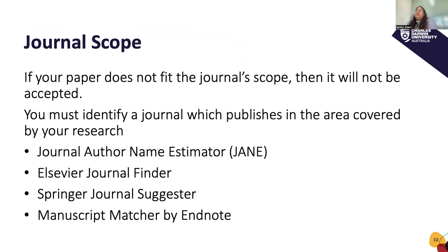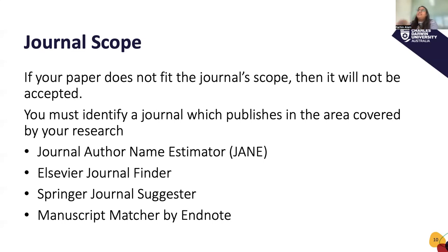The next thing you should look at is your journal scope. If your paper doesn't fit into the journal scope, it will not be accepted. It helps to think about audience — does your topic have broad appeal that a broad range of readers will be interested in, meaning you can consider multidisciplinary titles? Or does it require specialist knowledge, meaning you need to target journals with a narrower scope? There are tools designed to help you discover journals with a suitable scope, such as Journal Author Name Estimator (JANE), Elsevier Journal Finder, Springer Journal Suggester, and Manuscript Matcher by EndNote.